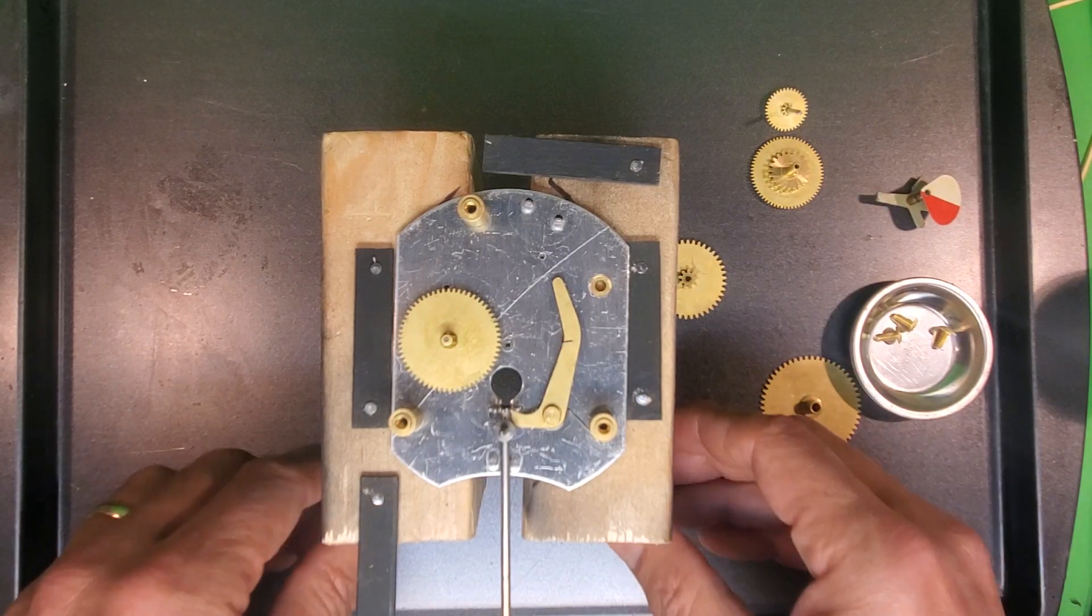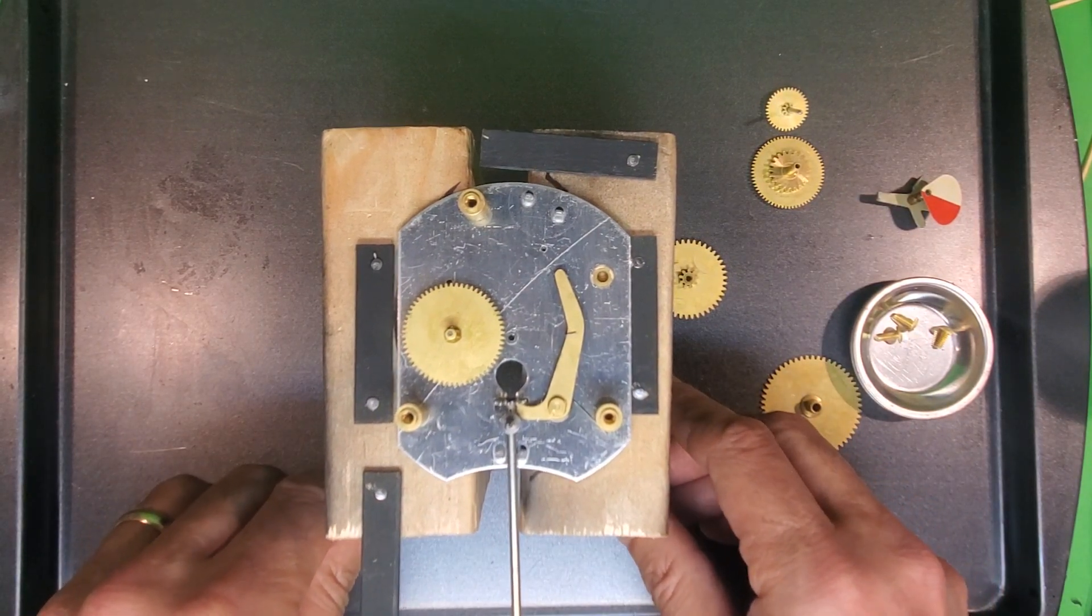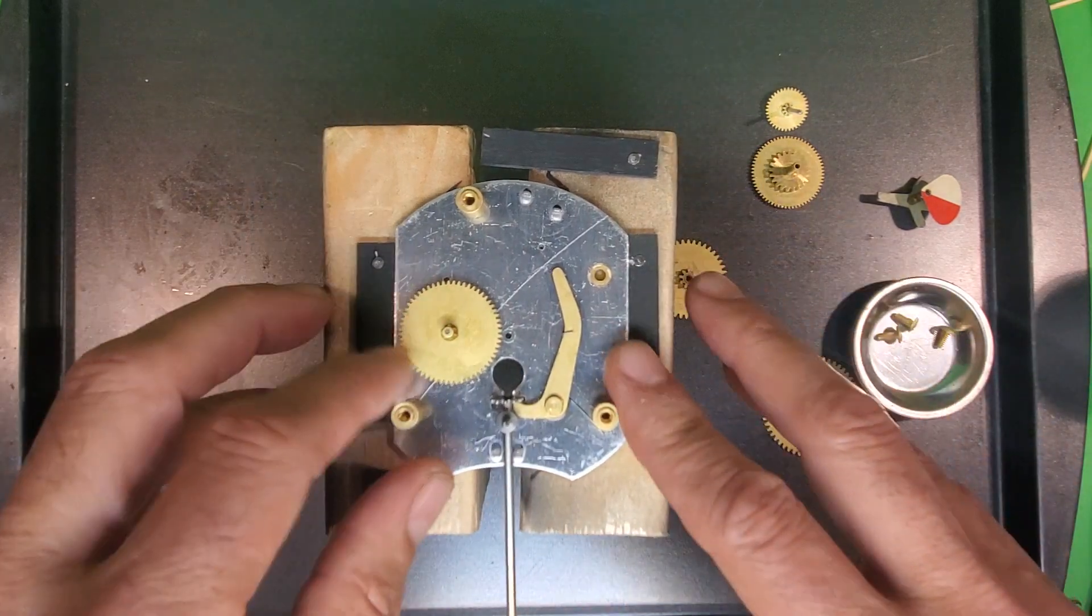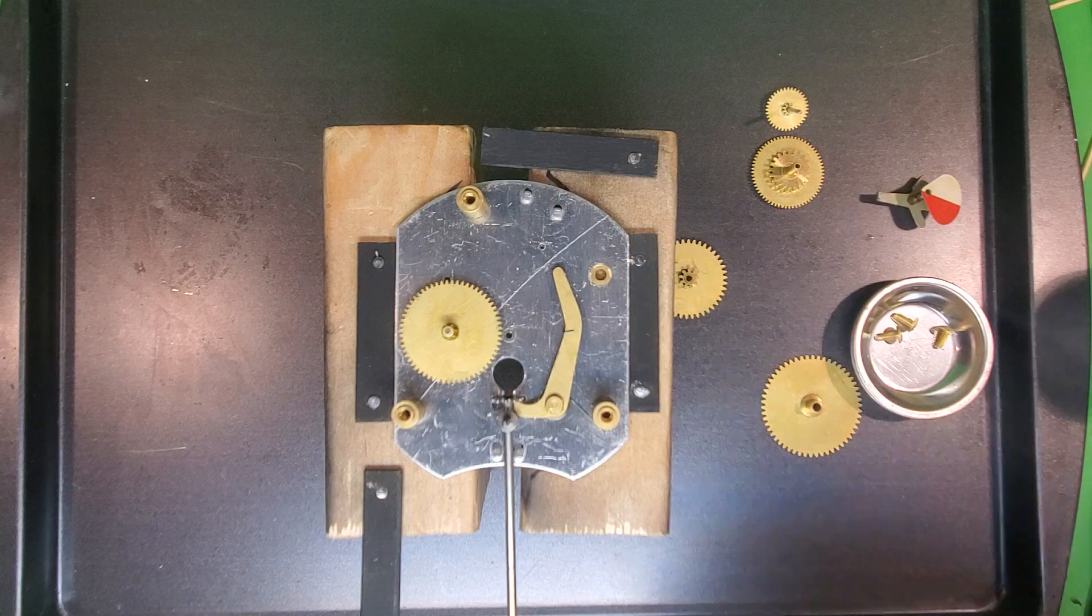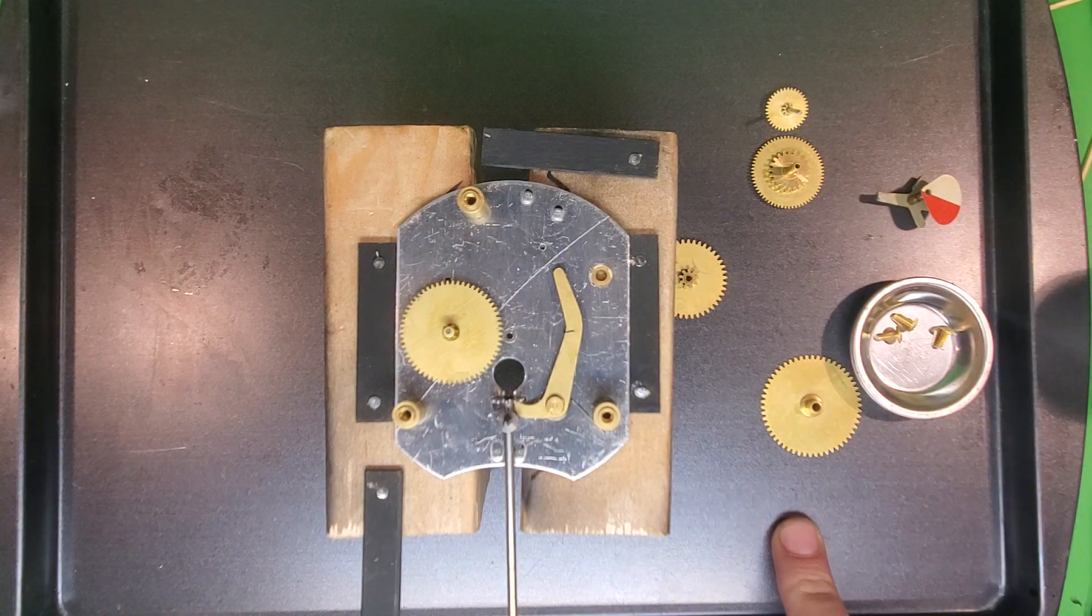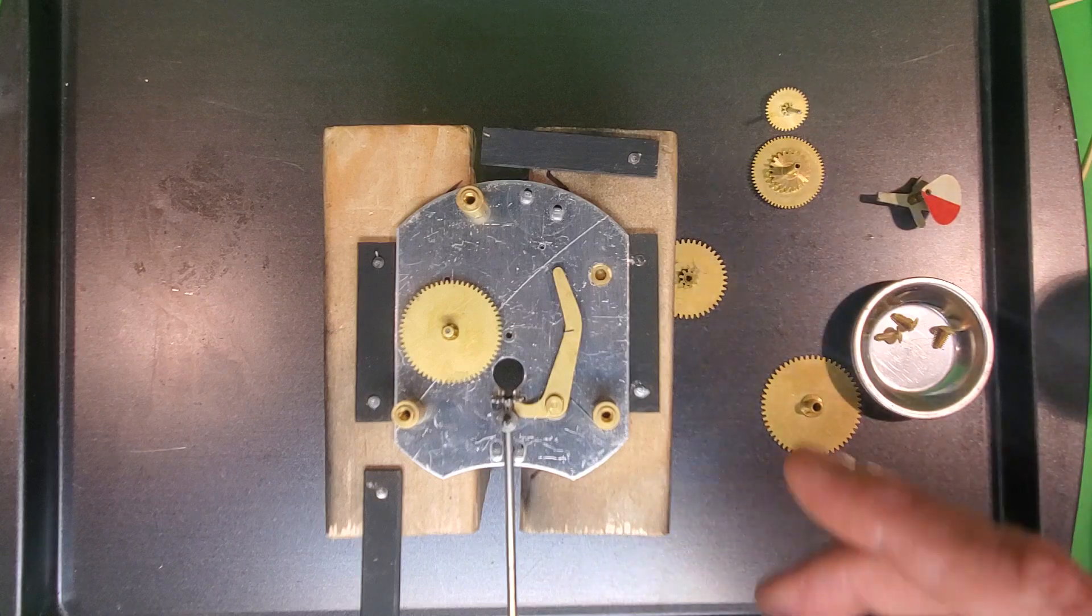Now I'm going to rebuild the movement. These are just two scraps of 2x4 that I put magnetic tape on the bottom. Do this on a cookie sheet. Holds it in place.